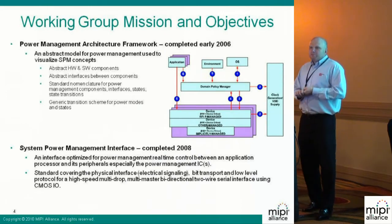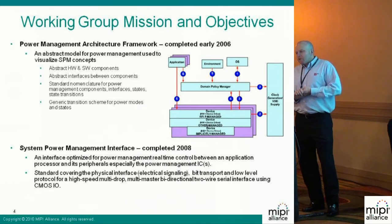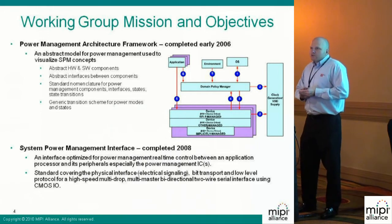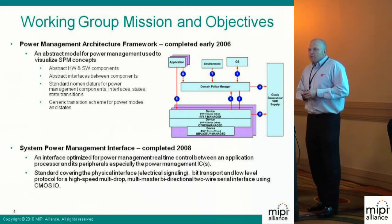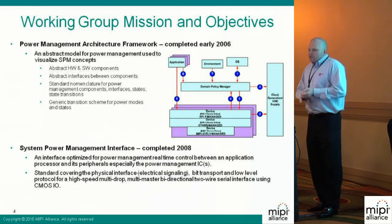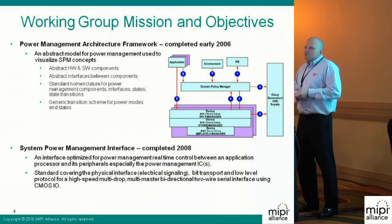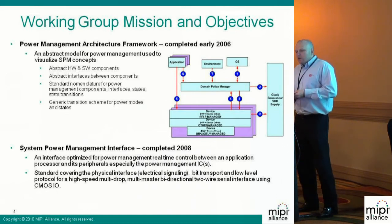The working group has had two big deliverables. The first deliverable is not a specification but a white paper — the Power Management Architecture Framework. This framework provides an abstract model for how to handle power management in a mobile platform. It includes abstract hardware and software models, standard nomenclature, and a generic transition scheme between different states of power-up, power-down modes, and different idle modes.